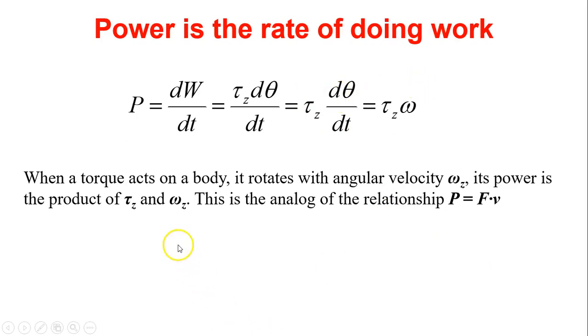Power is the rate of doing work, how fast you're doing work. Power is dW over dt. dW equals torque times d theta over dt, so power equals torque times omega. This is similar to the power we learned in translational motion. When a torque acts on the body, it rotates with angular velocity omega z. Its power is the product of torque and omega z. This is analogous to the relationship power equals F times v.